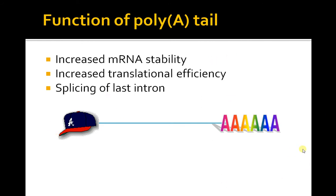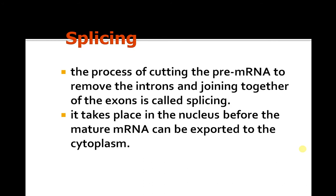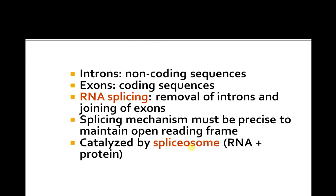Splicing is the process of removing introns and joining exons. This involves cutting the pre-mRNA to remove introns and joining together the exons, which is called splicing. It takes place in the nucleus before the mature mRNA can be exported to the cytoplasm. Introns are non-coding sequences; exons are coding sequences.